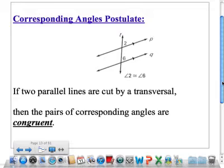The first postulate we're looking at here is called the corresponding angles postulate, and all that says is that if two parallel lines are cut by a transversal, then the pairs of corresponding angles are congruent.